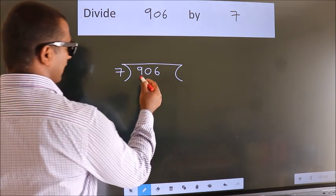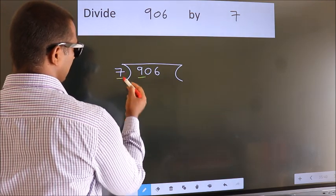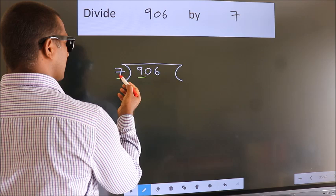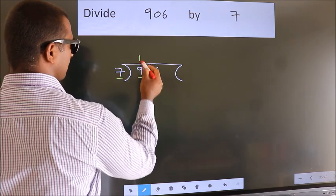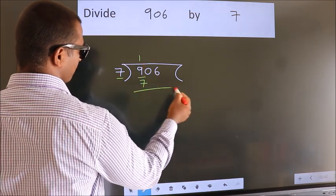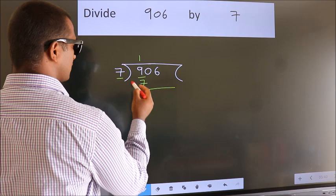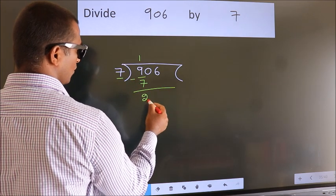Here we have 9. Here 7. A number close to 9 in 7 table is 7 times 1 equals 7. Now we should subtract. We get 2.